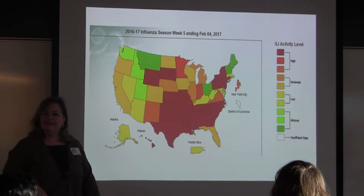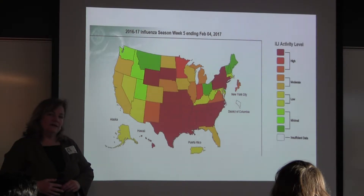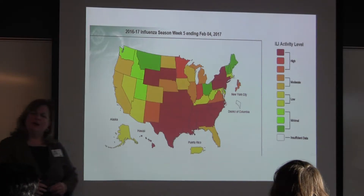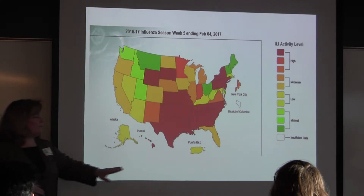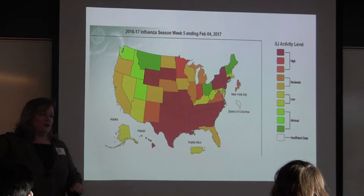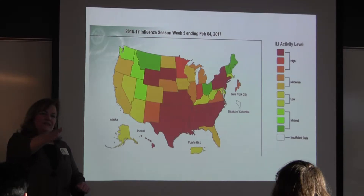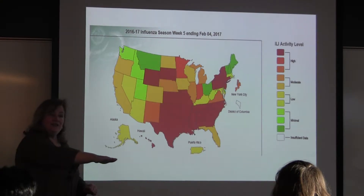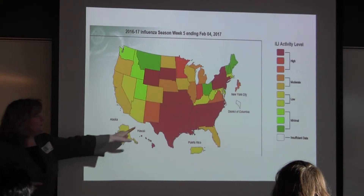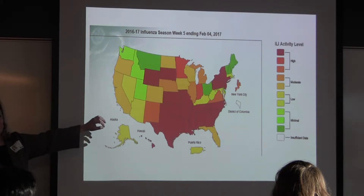Student question: I noticed on the first map that Puerto Rico was bright red when most of the US was green. Does the tropical location have anything to do with it? Speaker: I don't think the weather has anything to do with it. I think it hit there first. If you notice, their activity now is much lower. With an epidemiologic curve it goes up, there's usually a second peak, then it goes down and stays down. Puerto Rico is through their flu season — we're right in the middle of ours.